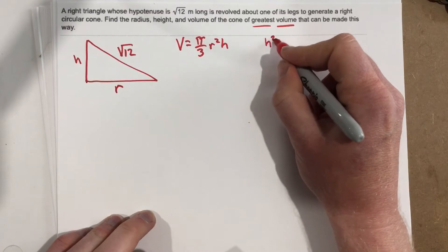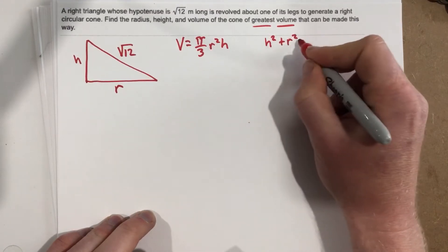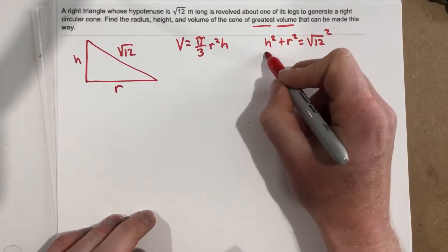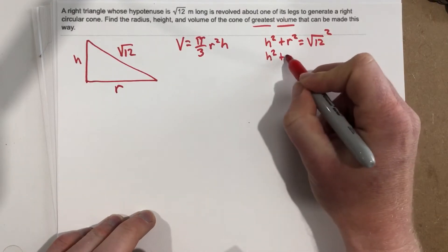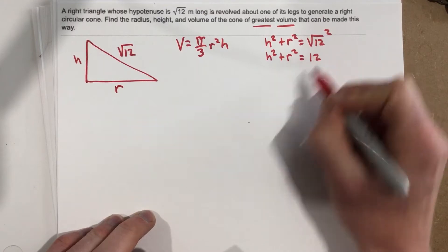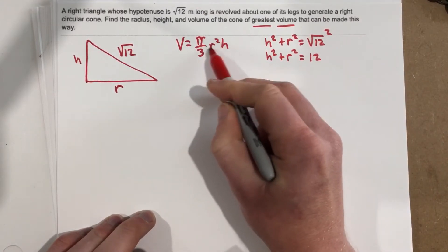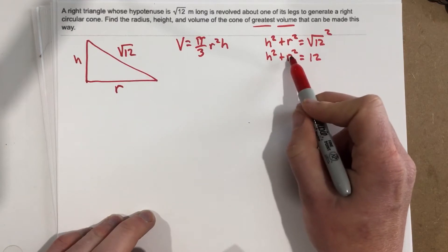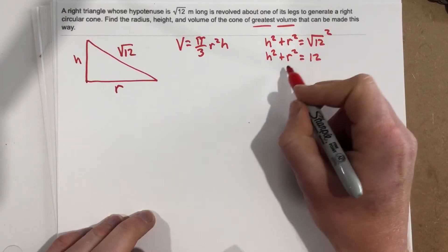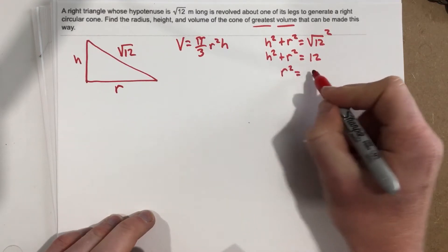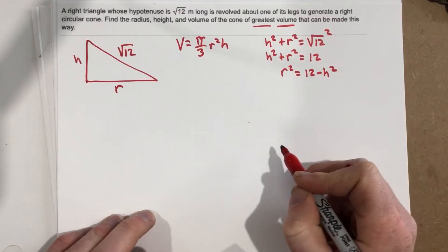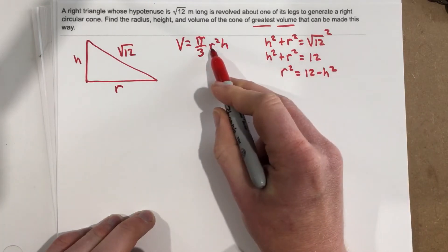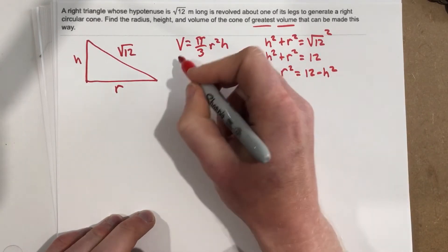We can say that h² + r² = (√12)², which is h² + r² = 12. Now r² is already in the problem, so I think it's smart to just solve for r² here. So we're going to subtract the h²: r² = 12 - h². And now we're ready to substitute this for the r² and we're down to one variable.